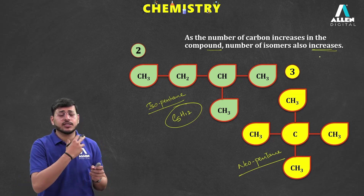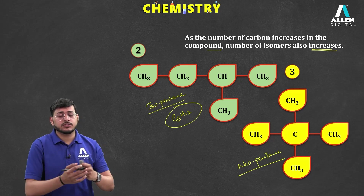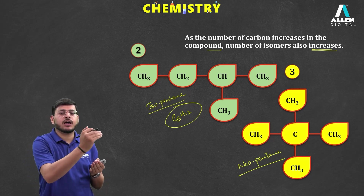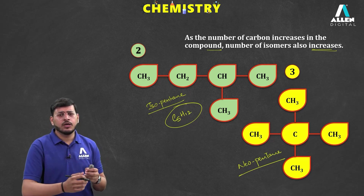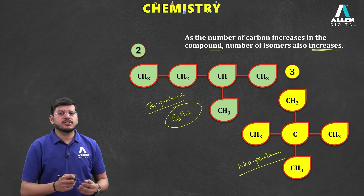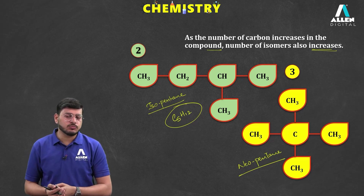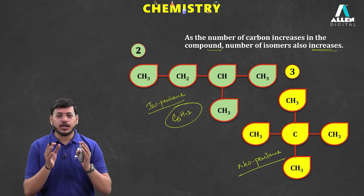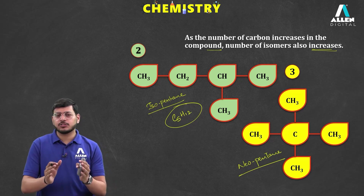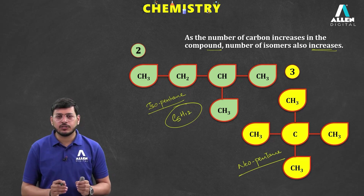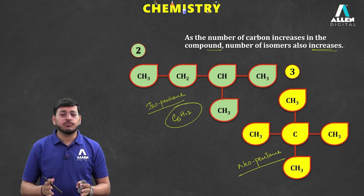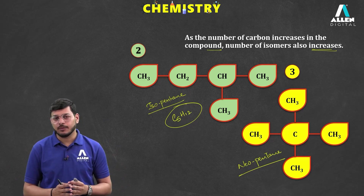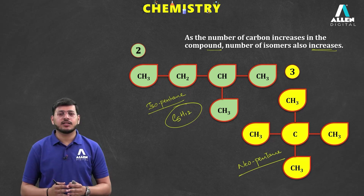When you take a six-carbon chain, more isomers are possible; with seven, even more. So as the number of carbon atoms increases in a compound, so does the number of isomers. These are the four properties — catenation, tetravalency, tendency to form multiple bonds, and isomerism — that explain why carbon is so versatile and can form 3 million compounds.